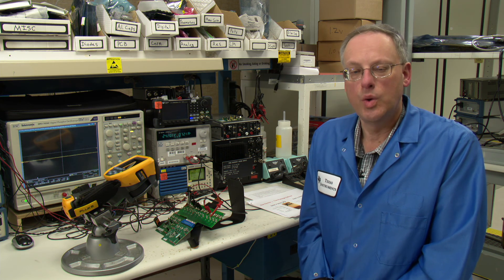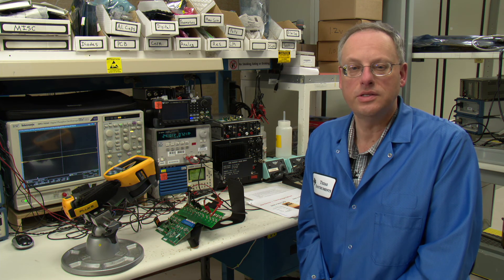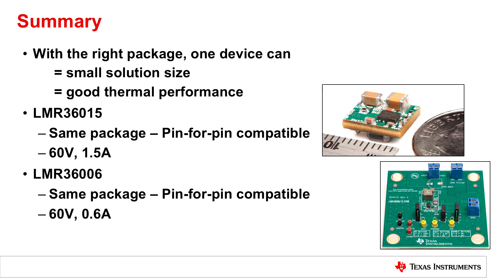So in summary, with the right package, one device can give you both small solution size and good thermal performance. If you need a 1.5 amp solution or a 600 milliamp solution, take a look at the LMR36015 or the LMR36006.